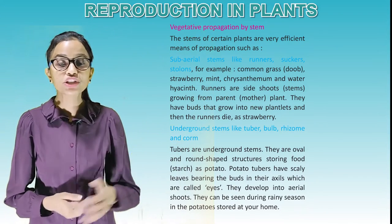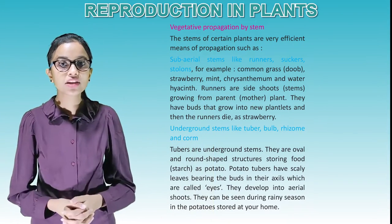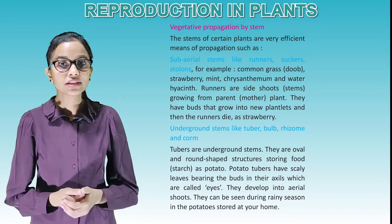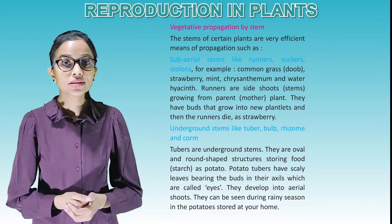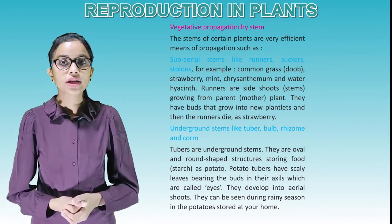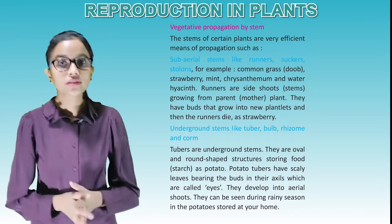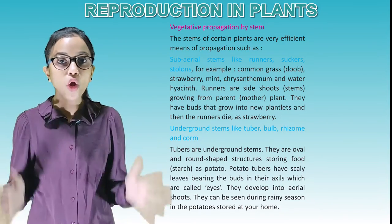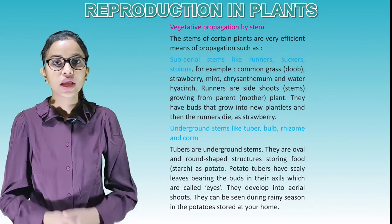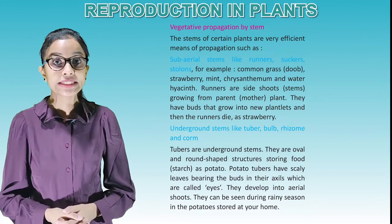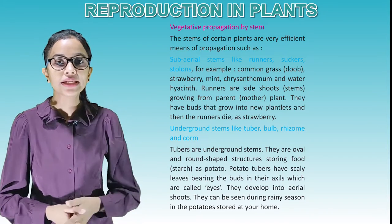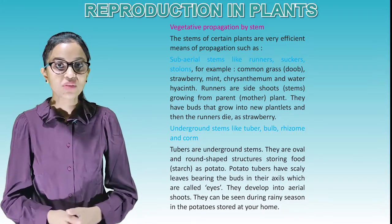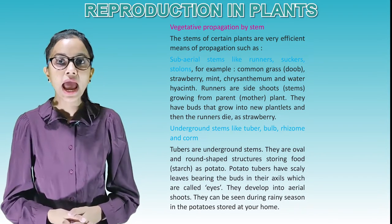Vegetative propagation by stems: The stems of certain plants have very efficient means of propagation, such as sub-aerial stems like runners, suckers, and stolons. Examples include common grass, strawberry, mint, chrysanthemum and water hyacinth. Runners are side-shoot stems growing from the parent or mother plant. They have buds that grow into new plantlets, and then the runners die, as in strawberry.